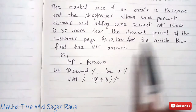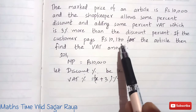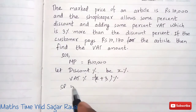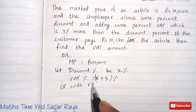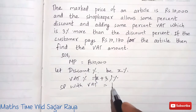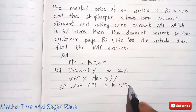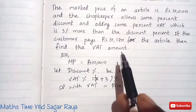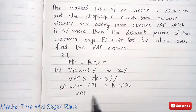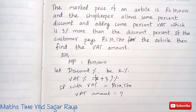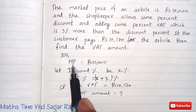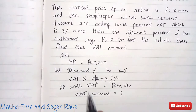If the customer pays Rs 10,170 — so this is the final price with VAT, given as 10,170 — then we have to find the VAT amount.